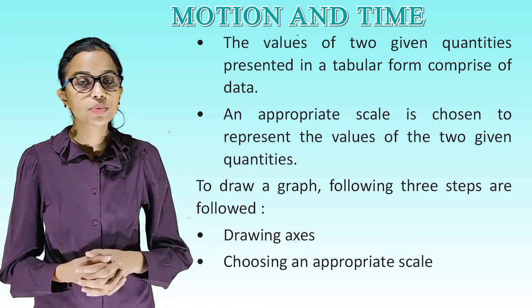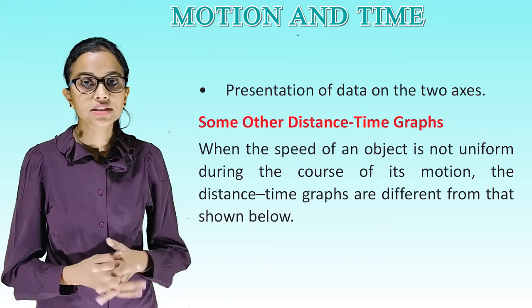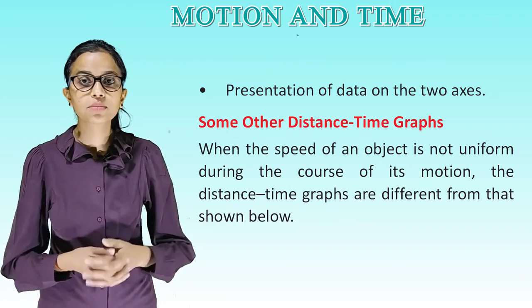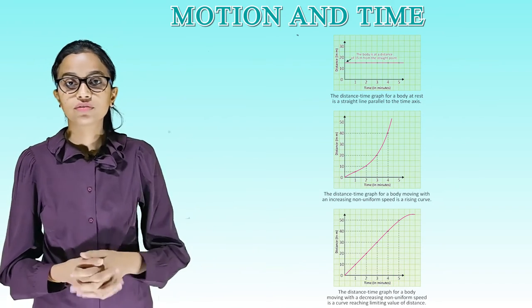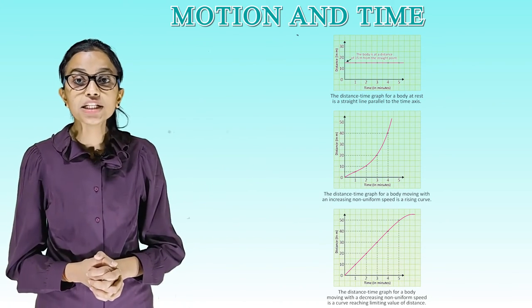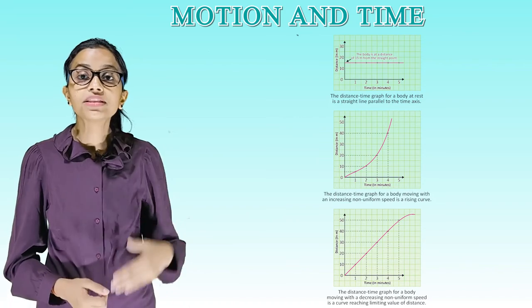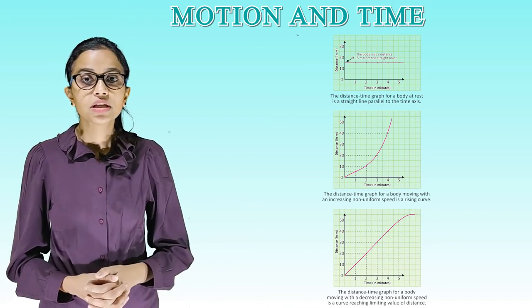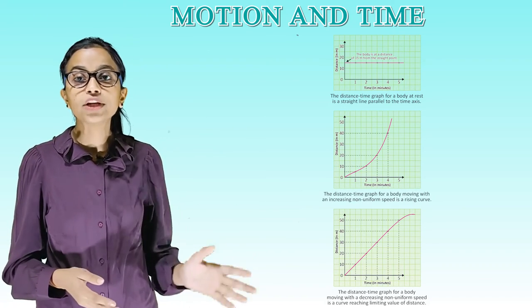To draw a graph, following three steps are followed: drawing axes, choosing an appropriate scale, presentation of data on the two axes. Some other distance time graphs. When the speed of an object is not uniform during the course of its motion, the distance time graphs are different from that shown below. So these are the different types of graphs. The first one is the distance time graph for a body at rest is a straight line parallel to the time axis. And the next one is the distance time graph for a body moving with an increasing non-uniform speed is a rising curve. And the third one is the distance time graph for a body moving with a decreasing non-uniform speed is a curve reaching limiting values of distance.